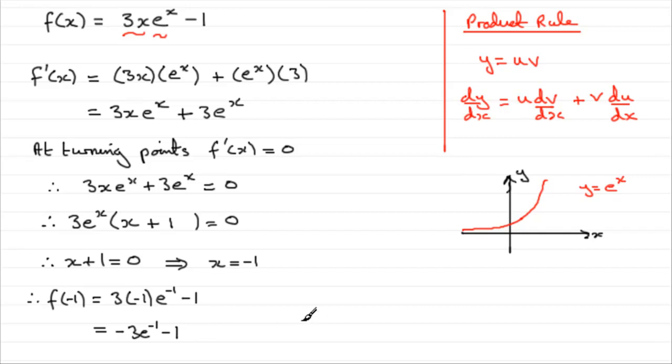But at the end of the day, what we've got is, therefore, the turning point P has coordinates minus 1, that's the x-coordinate here, minus 1. And then the corresponding y-coordinate would be minus 3 e to the minus 1 minus 1.